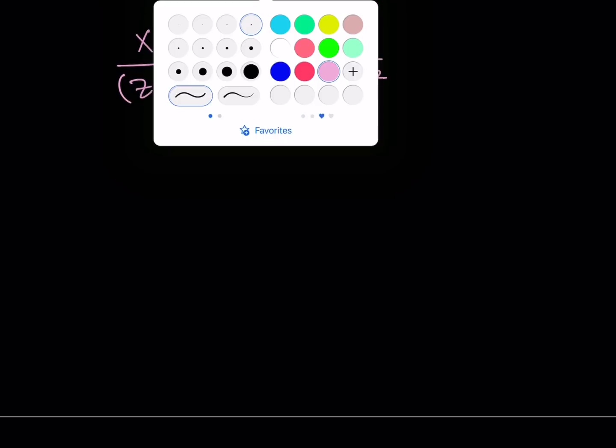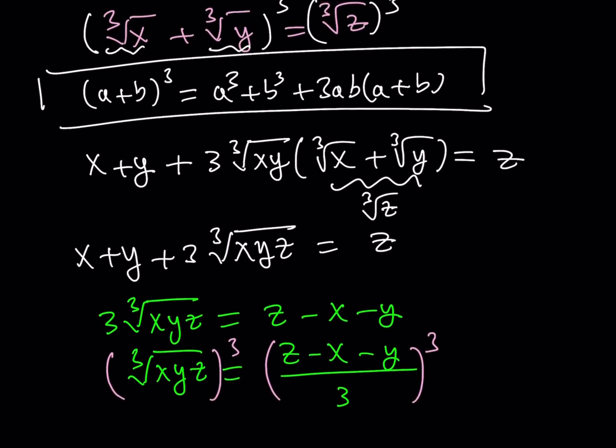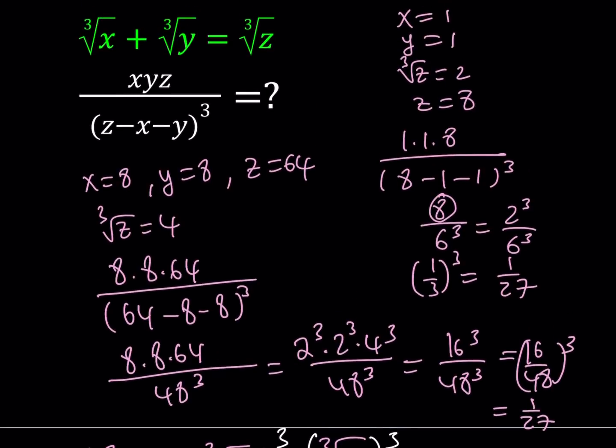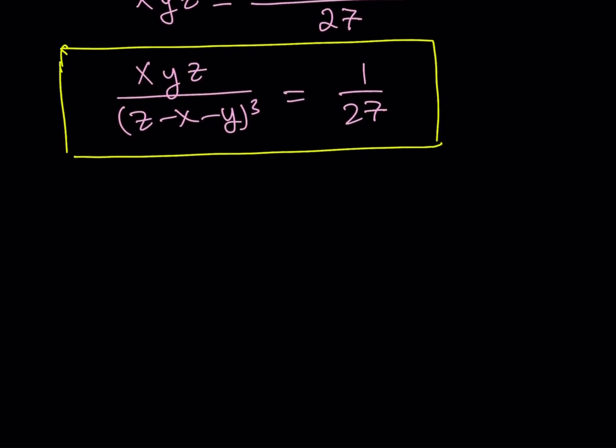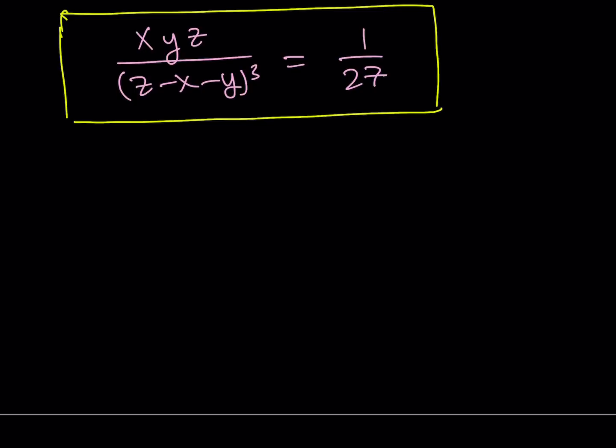And this basically shows you that the value of xyz divided by (z-x-y) cubed is always going to be 1 over 27, regardless of the initial x, y, z values you choose. Of course, we should definitely mention that x, y, z cannot all be 0 at this point. Imagine what happens in the original equation. They can all be 0 because 0 plus 0 equals 0. But unfortunately, for our expression to be well-defined, we cannot accept the 0s as a result. Even xyz itself cannot be 0 because that would give us 0 divided by some number, which is equal to 0. And this brings us to the end of this video.